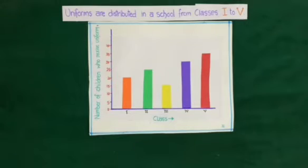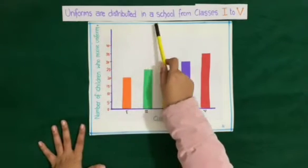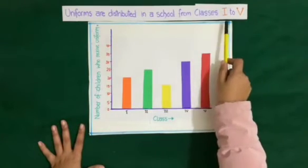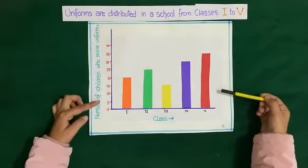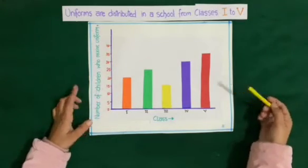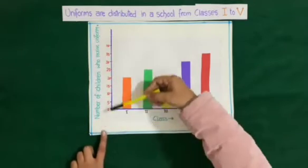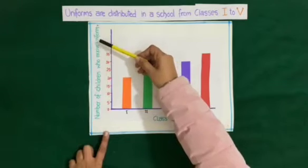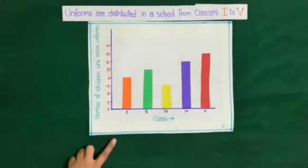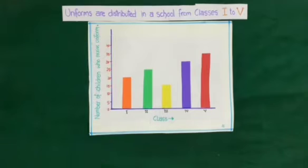The question is: uniforms are distributed in a school from class 1st to class 5th. Here is a bar graph which represents the classes in the horizontal direction and in the vertical direction, the number of children who received uniforms. Now we will solve some questions related to this bar graph.